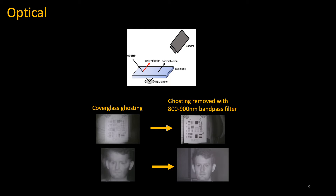Mirrorcle MEMS mirrors come with a cover glass protecting the MEMS mirror. In the specific model we had, the cover glass reflected significant amounts of light in the visible ranges. In the left column, you can see this induces significant ghosting artifacts. To overcome this, we insert a bandpass filter, because within the 800 to 900 nanometer range, the cover glass reflected the least amount of light.